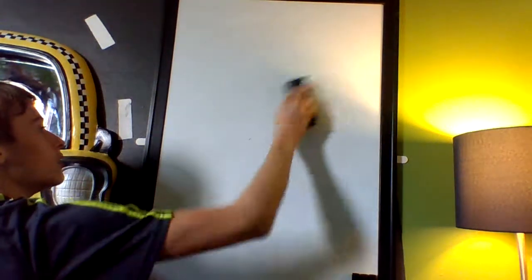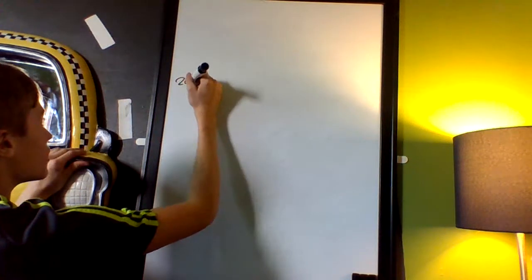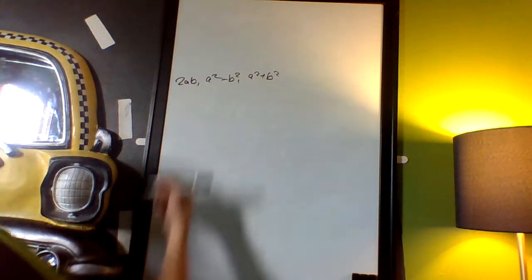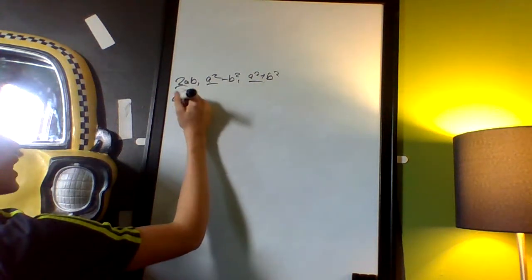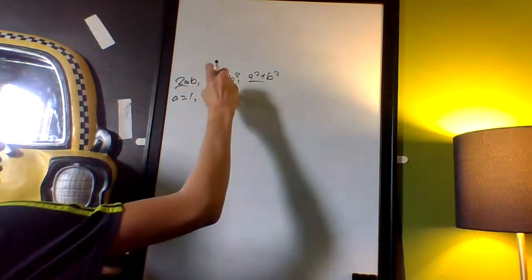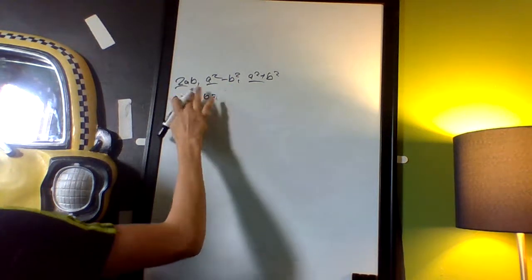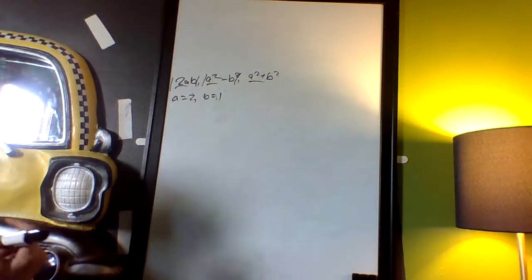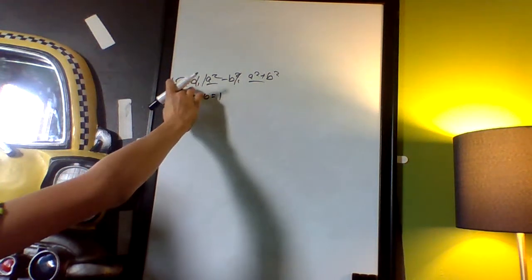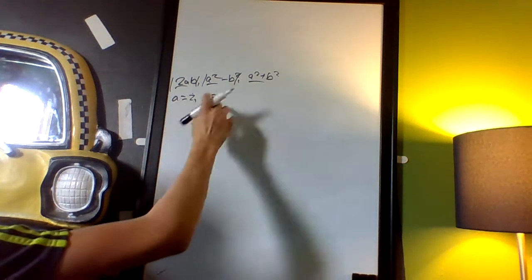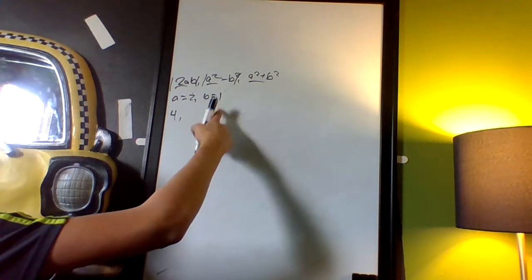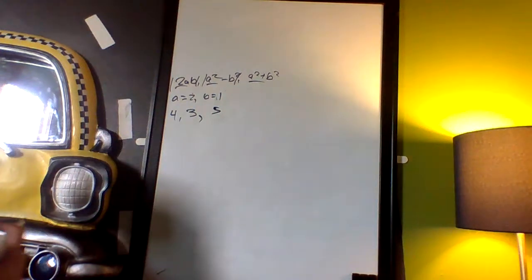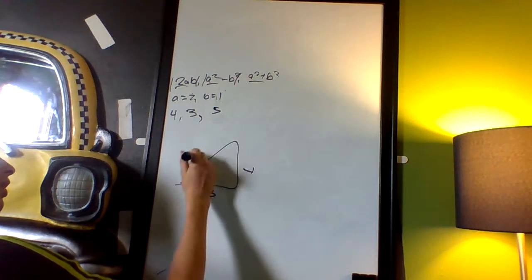So what does this mean? You give me an a and a b that are integers and these will always be a Pythagorean triple. For example, a equals 2, b equals 1: 2 times 2 times 1 is 4; 2 squared minus 1 squared is 4 minus 1, which is 3; 2 squared plus 1 squared is 5. I've just shown you a 3, 4, 5 triangle.